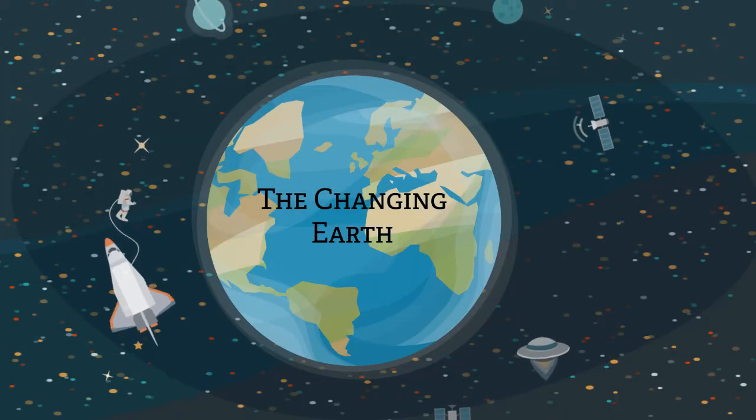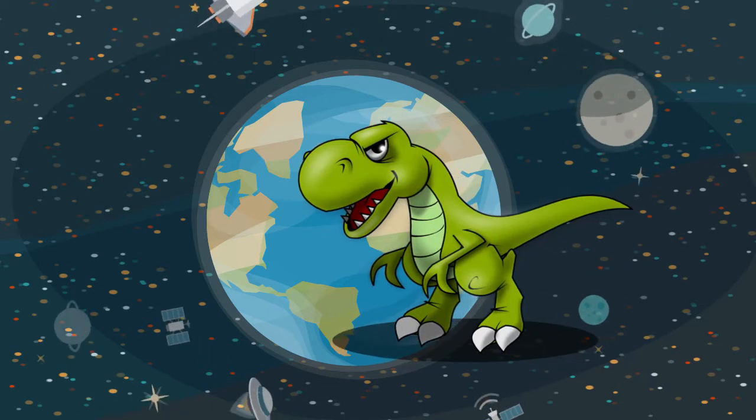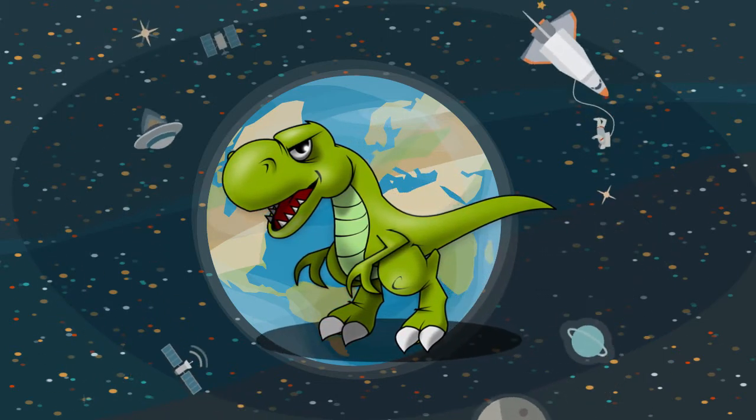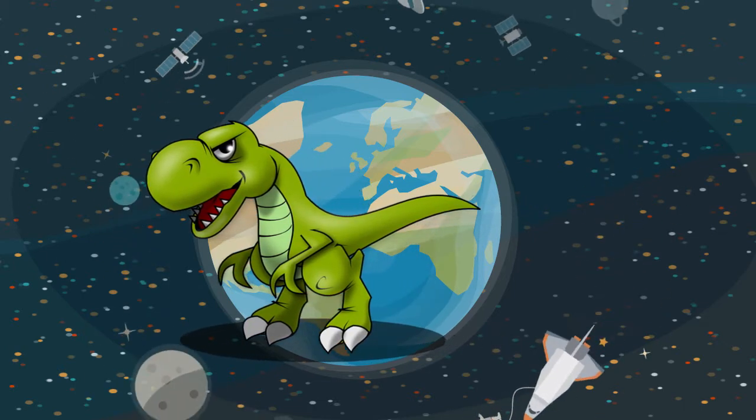The Earth is a forever changing mass of rock and magma. Today, the Earth is not the same as it was during the time of the dinosaurs. Let's look at how the Earth has changed over the past million years.